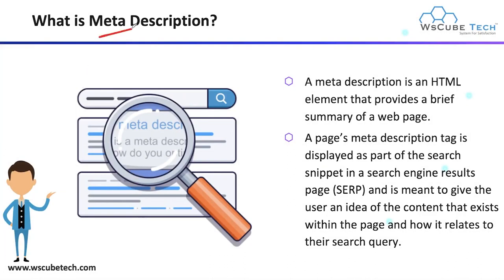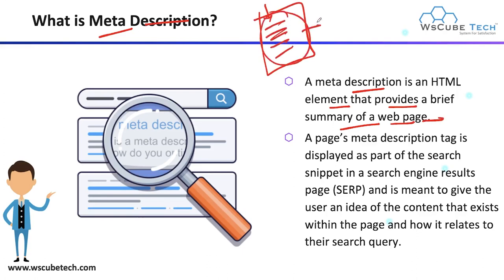Meta description is an HTML element that provides a brief summary of a web page. Any information which you have on your web page, you can keep a descriptive overview of on your search engine result page — that is your meta description. A page meta description tag is displayed as part of your search snippet in a search engine result page, and is meant to give the user an idea of the content that exists within the page and how it relates to their search query.